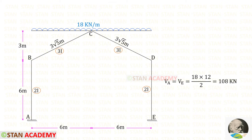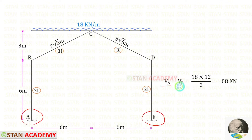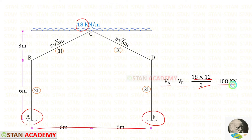Since this frame is symmetrical with respect to dimensions and loadings, we can easily find the vertical reactions at points A and E. To find VA and VE, we multiply the load with the distance and divide by 2. When we do that, we get 108 kN.